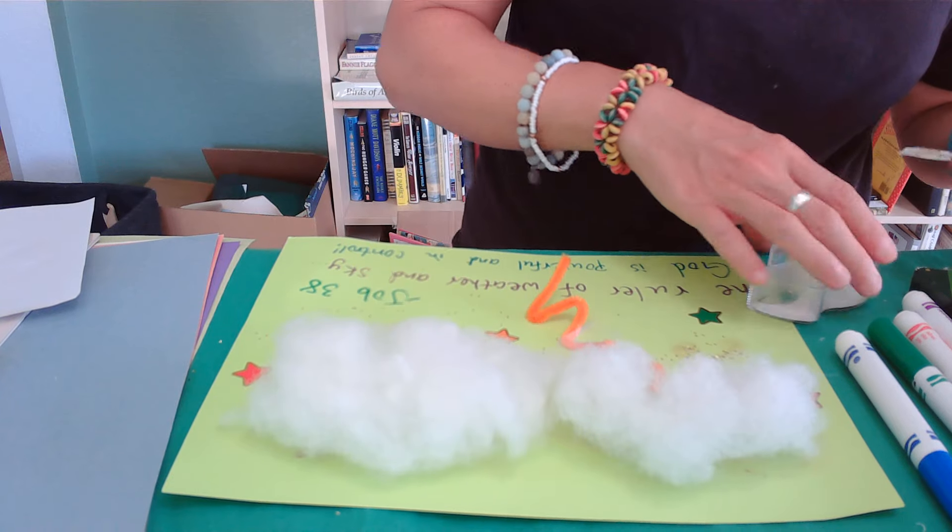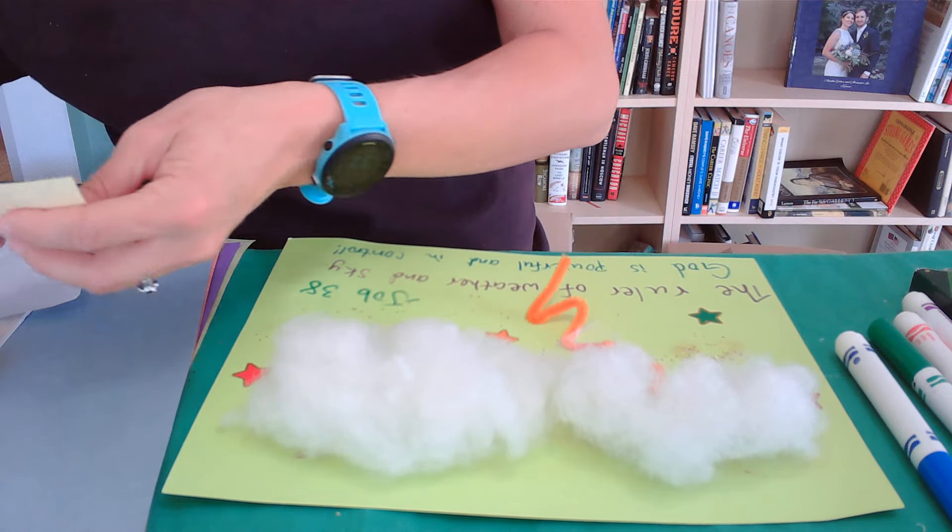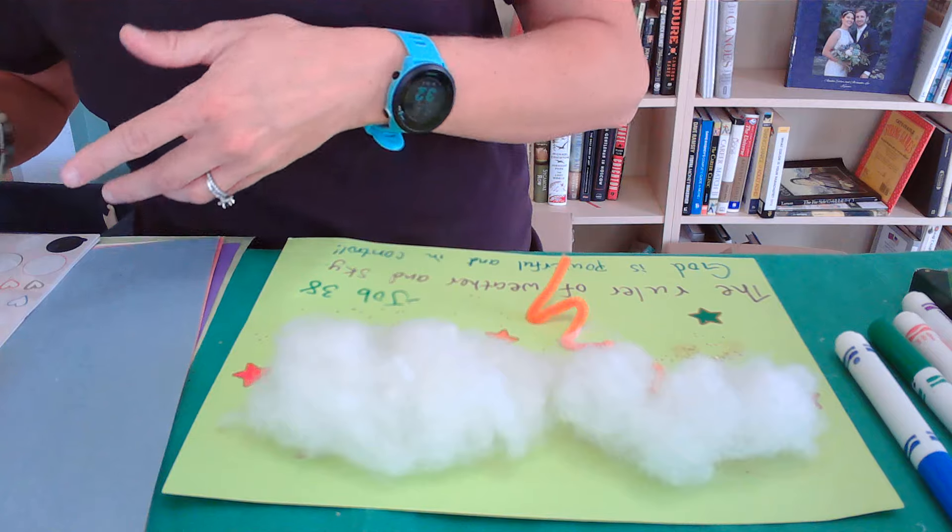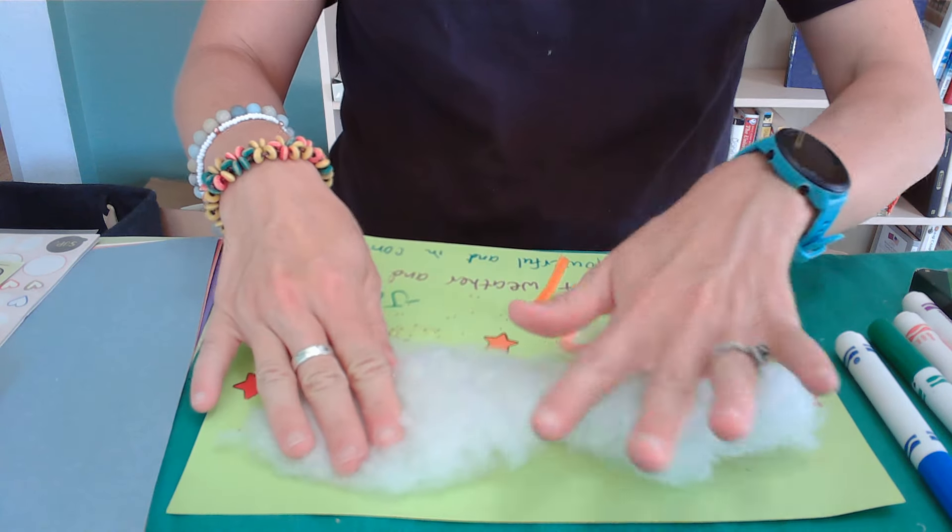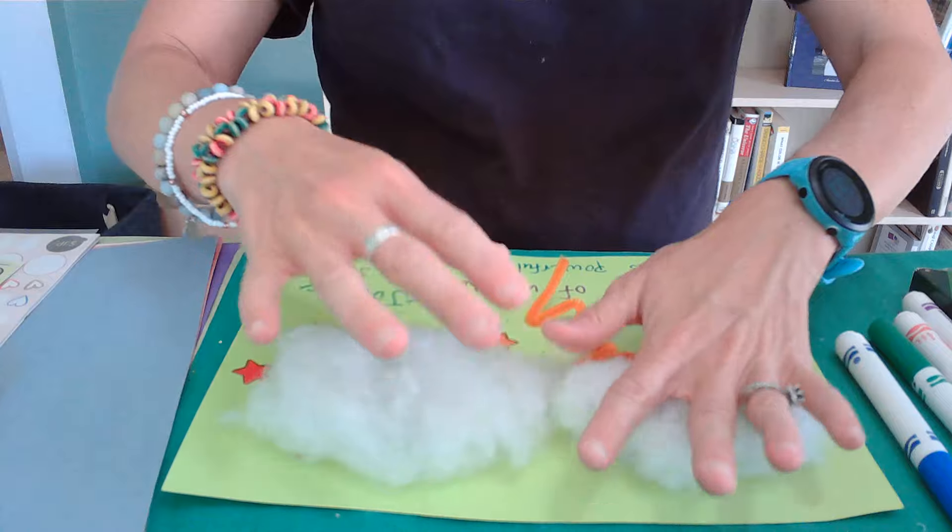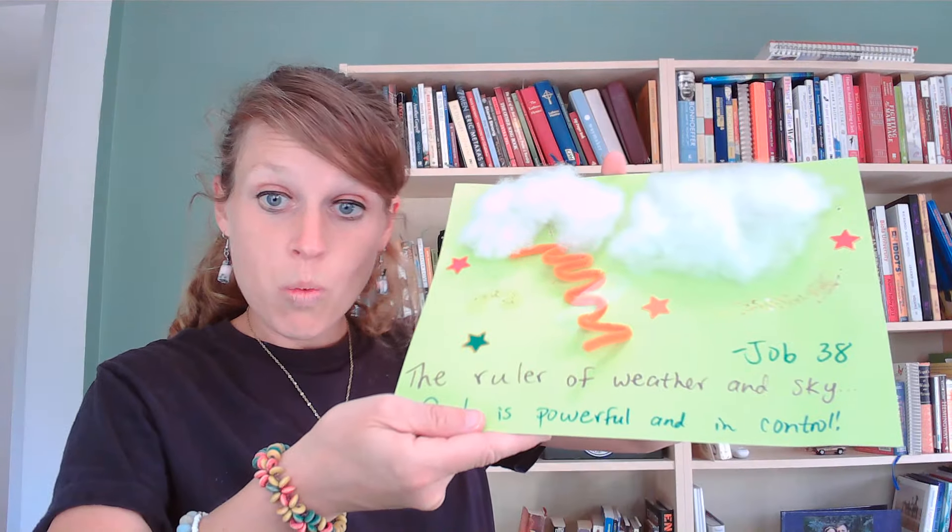And remember how mighty and powerful and awesome God is. Which really is the thing that's incredible we see through this passage. It's just, wow. God is big and we're little. And he's pretty powerful and strong. So we have our lovely weather collage poster.